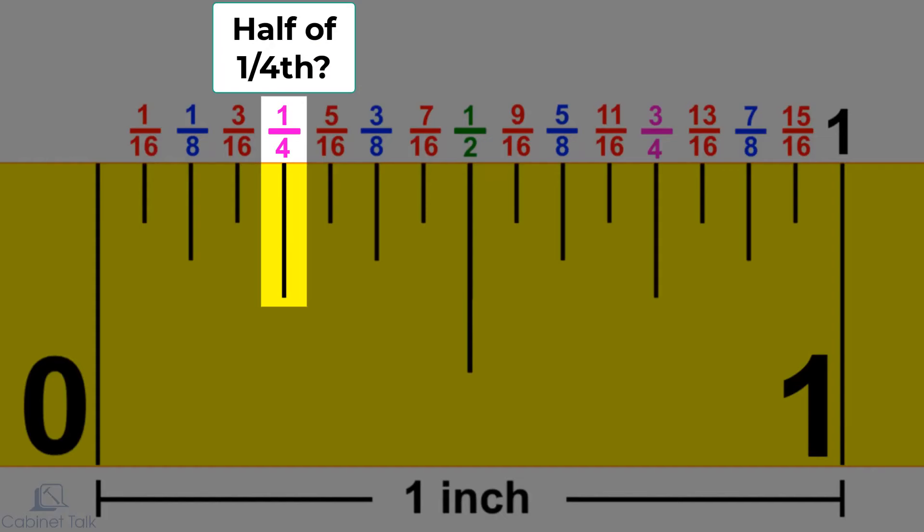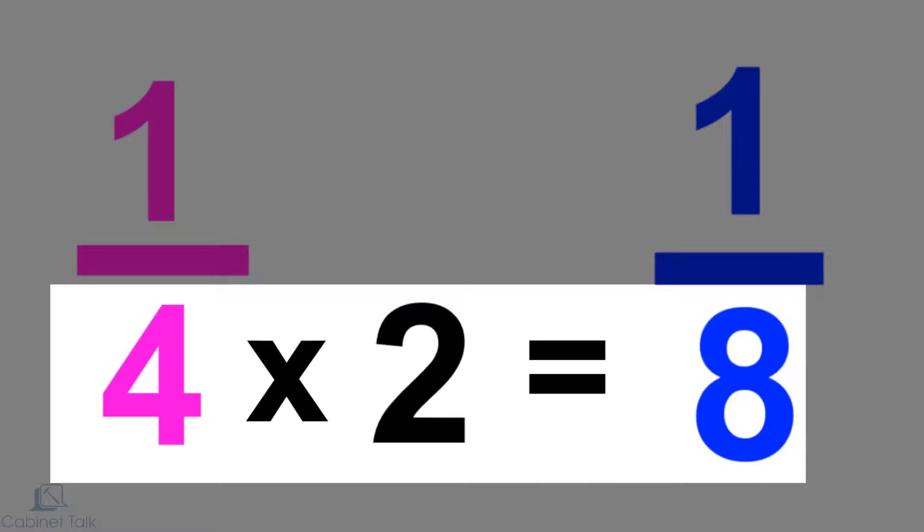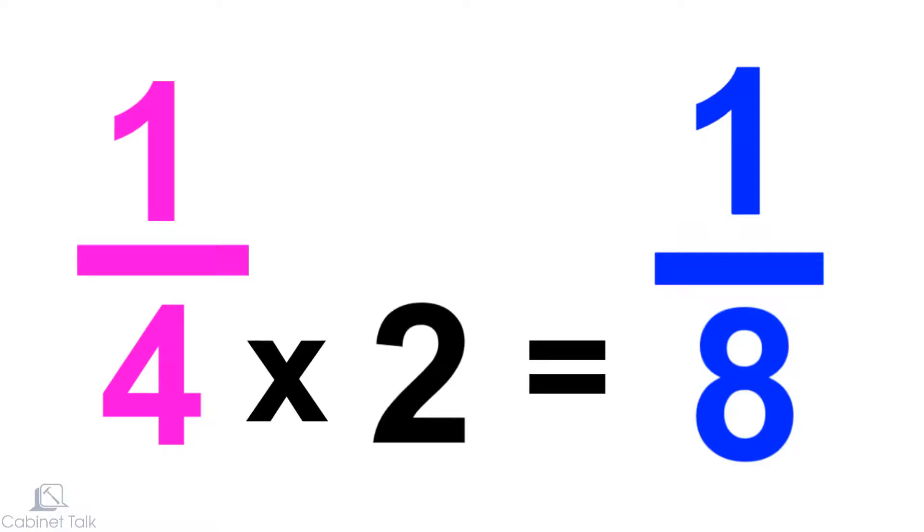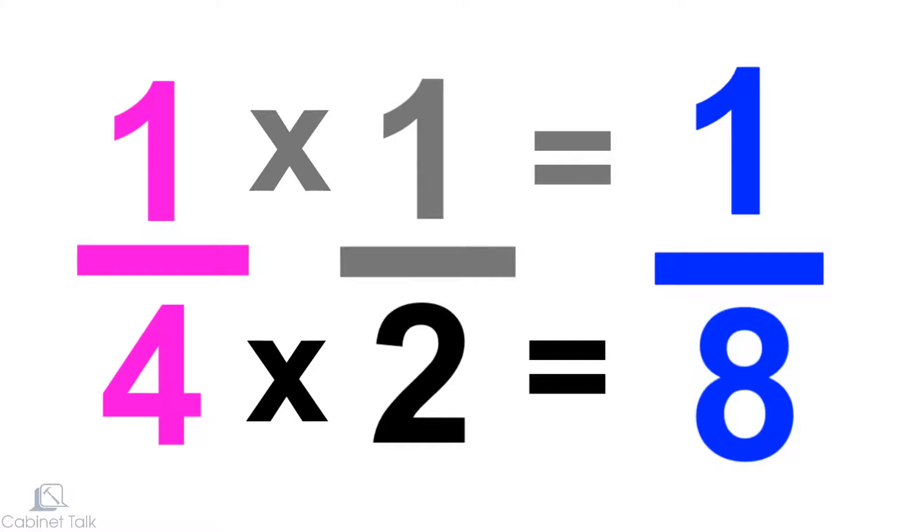Here's a tip for dividing a measurement in half. To quickly get half of a measurement, multiply the denominator by two. To find half of one-quarter, for example, multiply four by two. This gives us one-eighth. This trick works because what you're really doing is multiplying the whole fraction by one-half. Because you're always multiplying the numerator by one, it'll always be the same, so you can just skip that step and multiply the denominator by two.